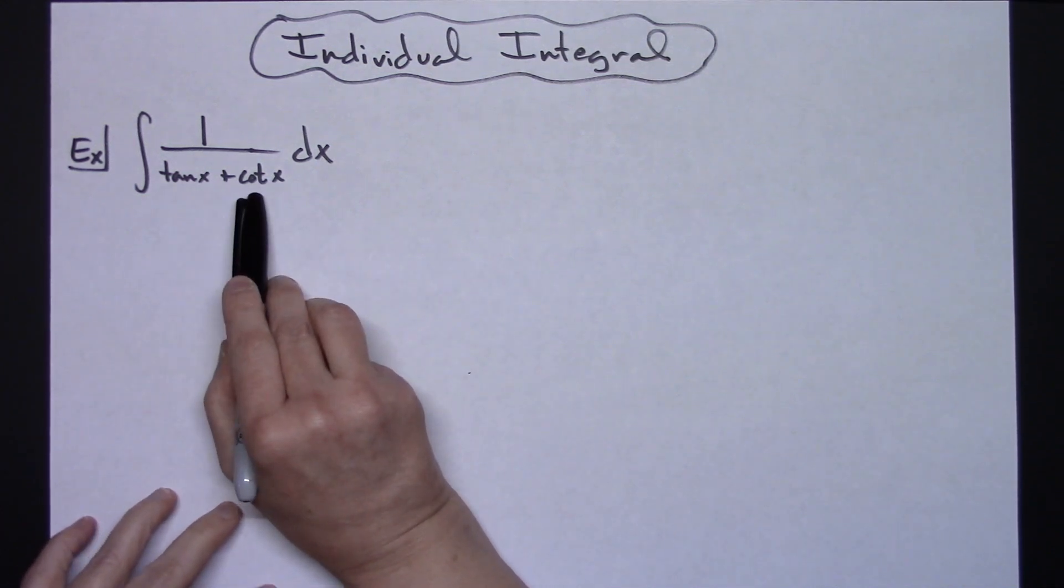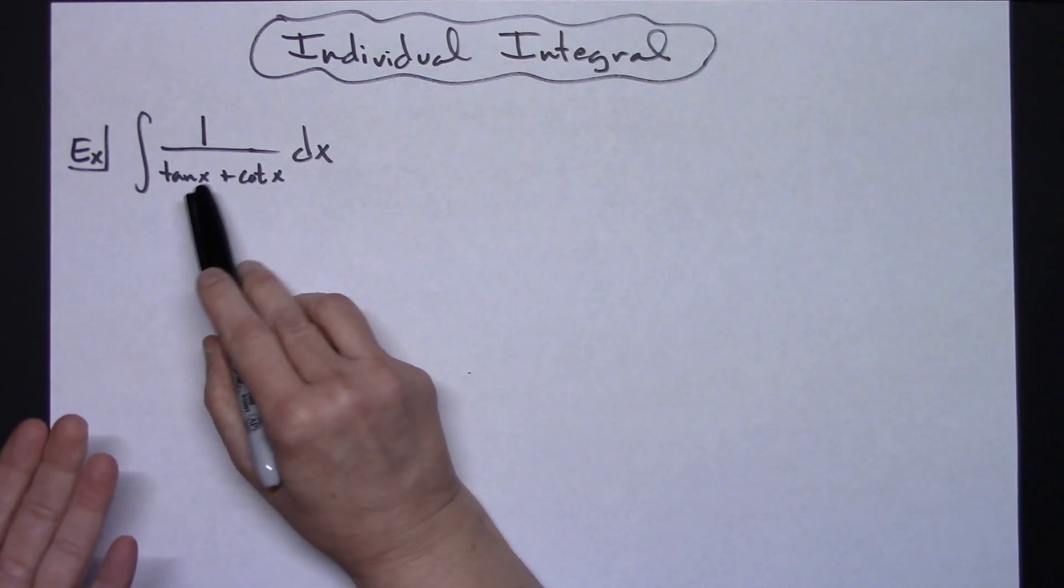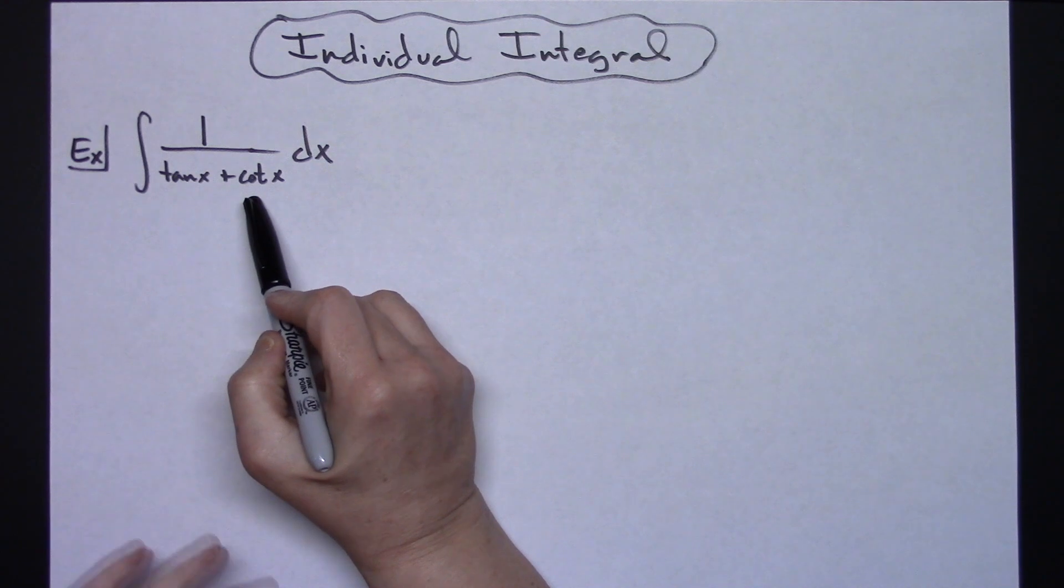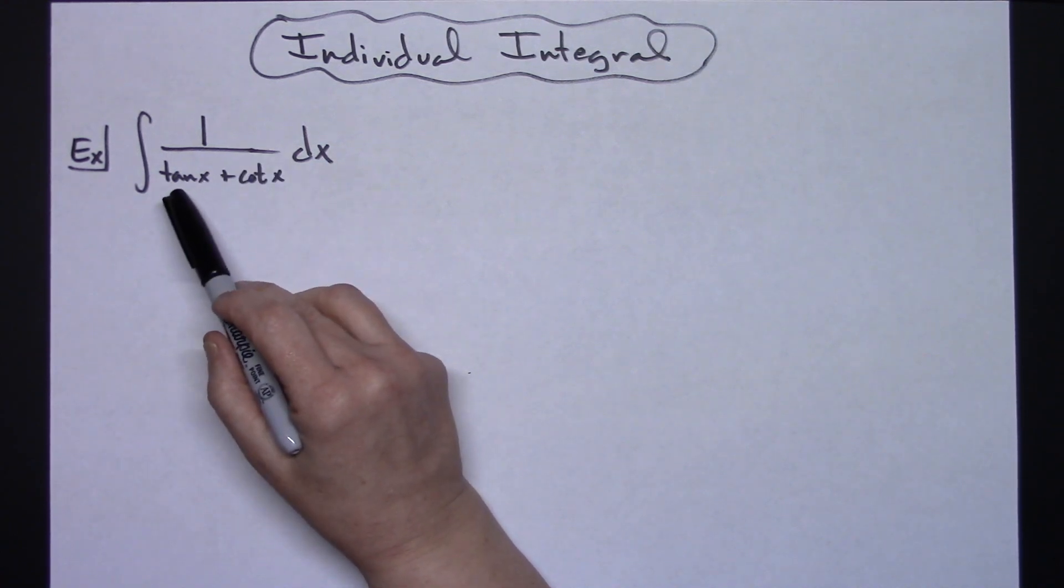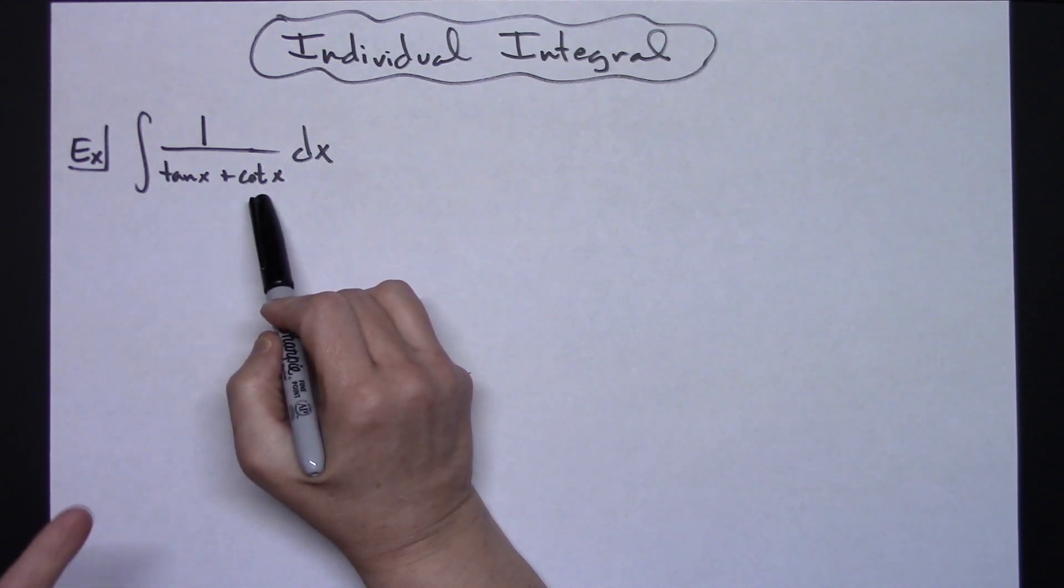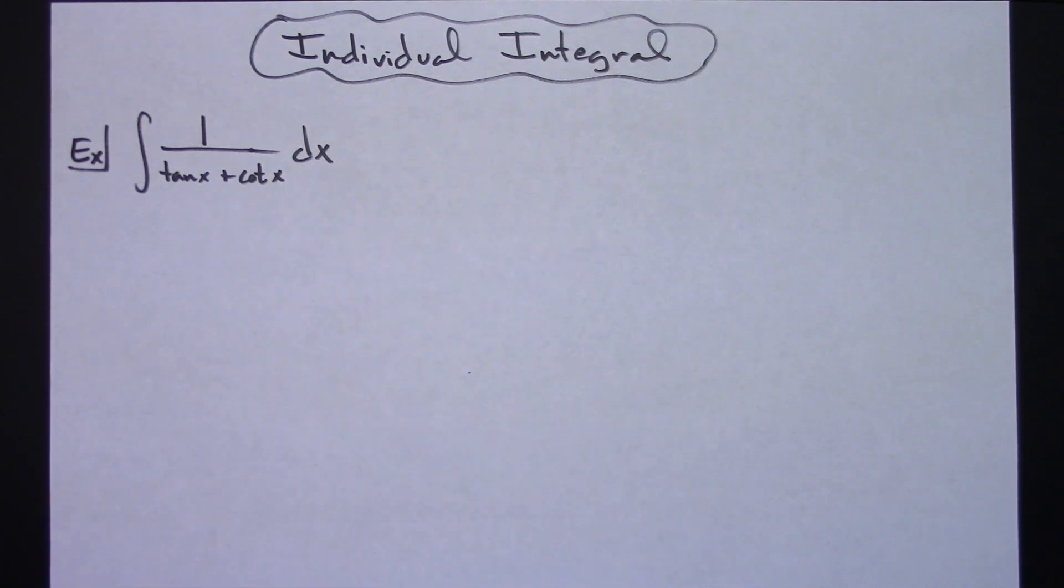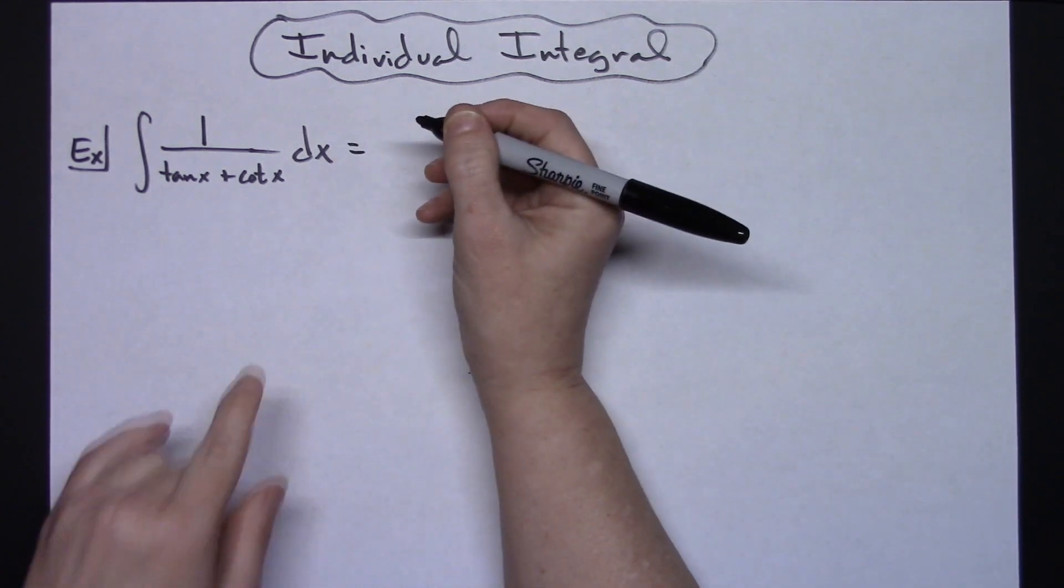Now first off with the tangent cotangent, granted you could go ahead and put reciprocal identities in there like 1 over cotangent 1 over tangent but in all honesty that really doesn't help a lot. I find most often that if we've got a tangent and cotangent it really does help to go to the sine over cosine and cosine over sine replacements just tends to lead to more different variety of substitutions that we can do there.